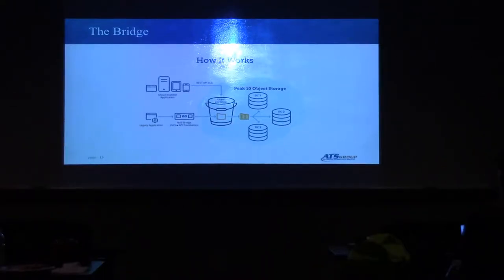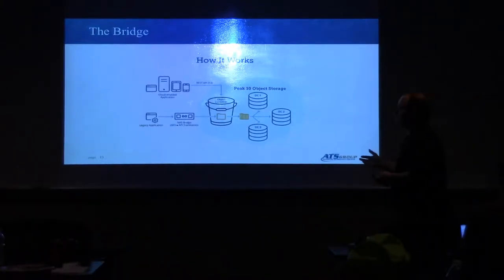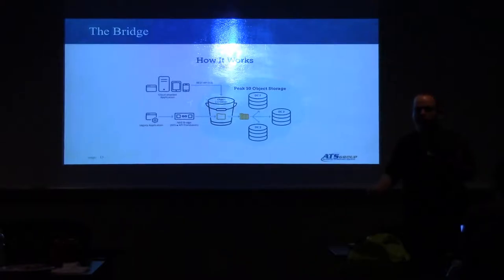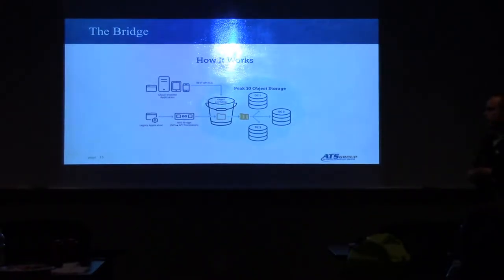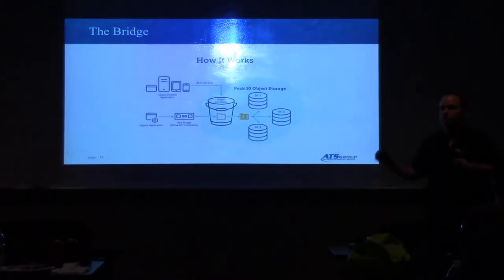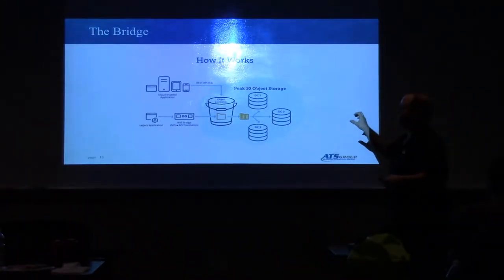Your applications can either speak native object via a REST API, or if your application is a legacy application that speaks file or block, these companies have created bridges that take object storage and translate it. So you have this big object storage implementation — let's say 50 petabytes — and you have servers sitting in front of it that translate object to file. That's how big enterprise object storage vendors are trying to displace existing filers. They're saying: you can buy our object storage and still have your network drive that all the Windows clients connect to — you just need to use our NAS bridge.